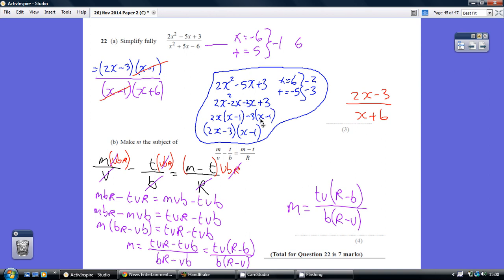And then our final answer is the bits that's not in the brackets, so 2x minus 3 and the repeated bracket, x minus 1. That's our numerator.